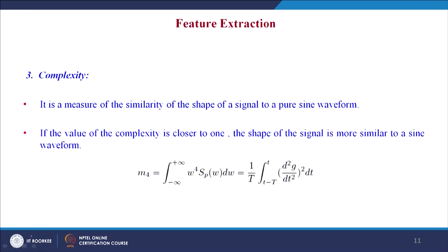Complexity is the second derivative of activity and is a measure of the similarity of the shape of a signal to a pure sine waveform. If the value of complexity is close to 1, the shape of the signal is more similar to a sine signal. It is given by the expression: (1/T) × integral from −T to T of (d²g/dt²)² dt.